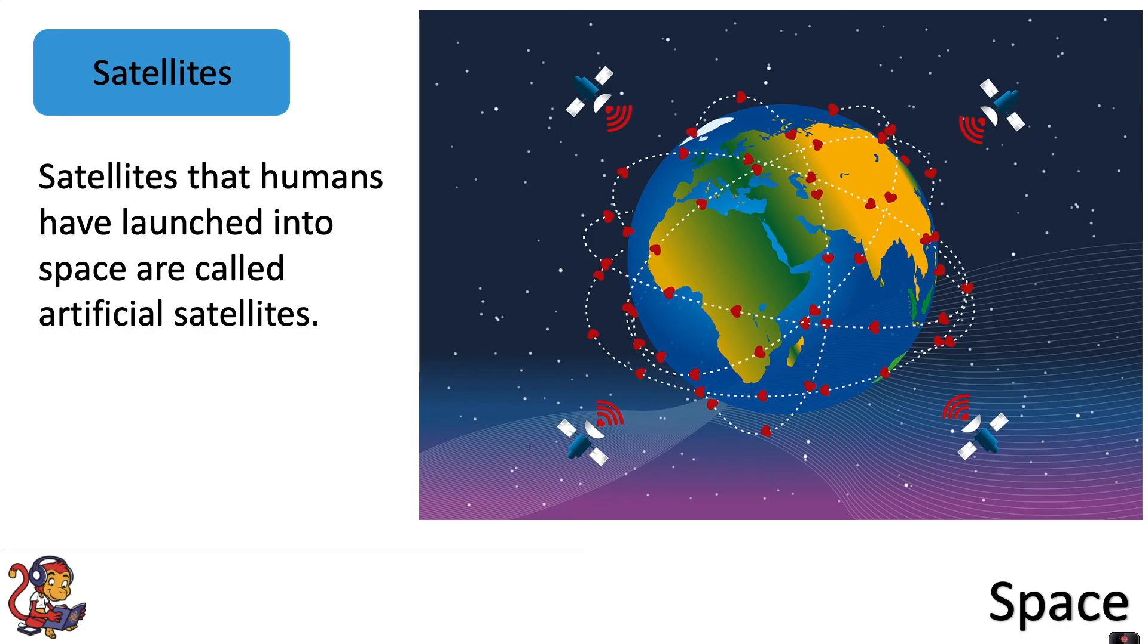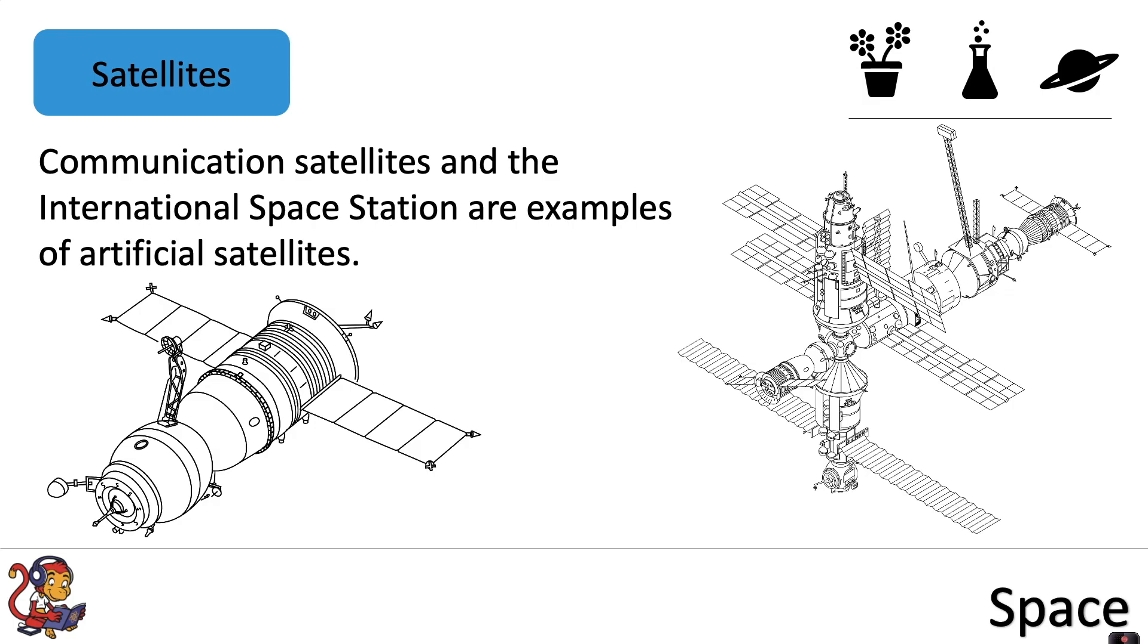Satellites that humans have launched into space are called artificial satellites and there are thousands of artificial satellites in space. Communication satellites and the International Space Station are examples of artificial satellites.